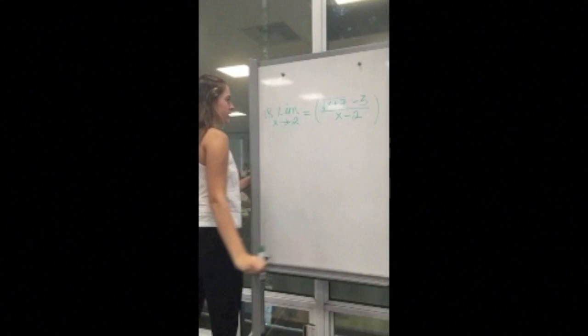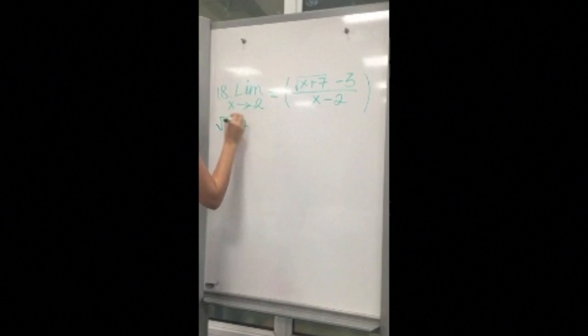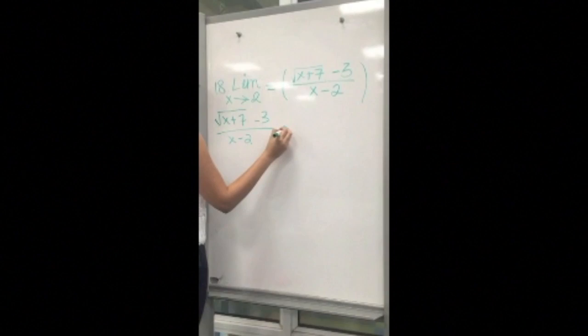You want to get rid of the square root on top. To do this, you have to multiply both the top and the bottom by its conjugate, which in this case is square root of x plus 7 plus 3.